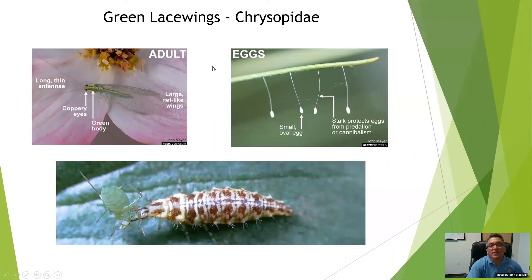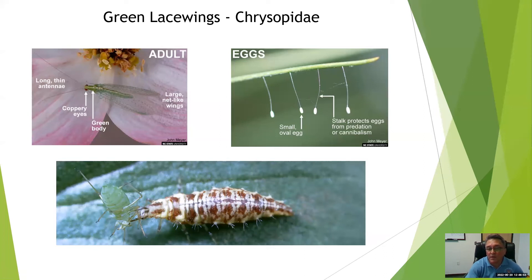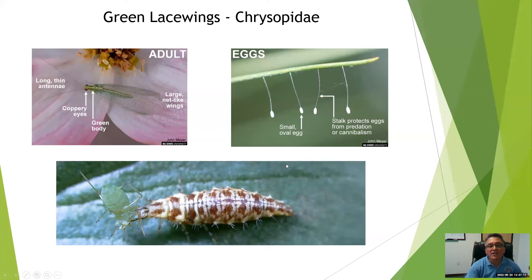Most of you are familiar with green lacewings. Here's the adult — very delicate, net-winged with an obvious green body shape. I'm sure many of you have seen the eggs laid on long stalks with the egg up on the end of the stalk. This helps the animal because once they hatch they're looking for a meal and they're cannibalistic — they'll eat each other. This is a later instar consuming an aphid. They have long mandibles that aid in capturing prey. You can actually purchase lacewing larvae and eggs from commercial insectaries.